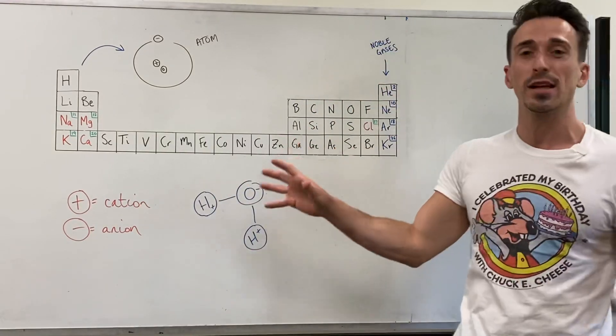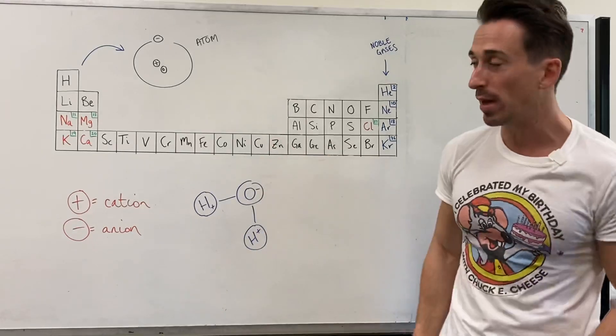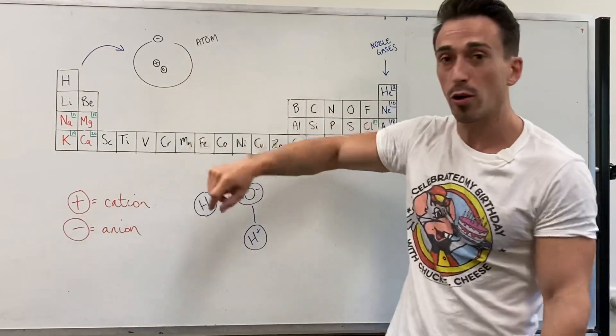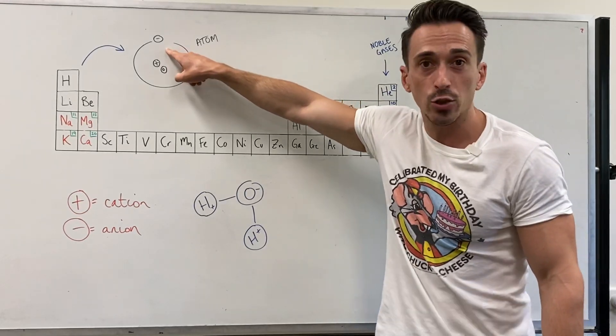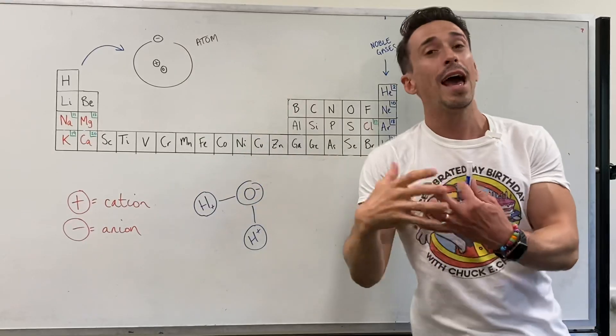Now the periodic table contains all the atoms and elements of the universe in a particular order. That order being hydrogen number one, that one tells you there's one positive proton, one neutral neutron, and one negative electron. Helium being two has two protons, two neutrons, two electrons, and so forth.